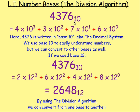4,376 is written in base 10, which means we can express the 4,000 as 4 times 1,000, and 1,000 you could write as 10 to the power of 3. With the 300, you can write the 100 as 10 to the power of 2. With the 70, you can write that as 7 times 10, which is 10 to the power of 1. And with the 6, you could write that as 6 times 10 to the power of 0. Every part has a times 10 to the power of something — that means it's written in base 10, also known as the decimal system.